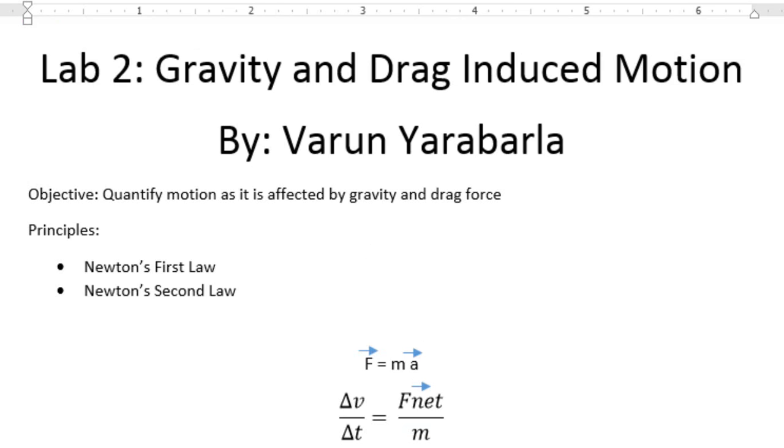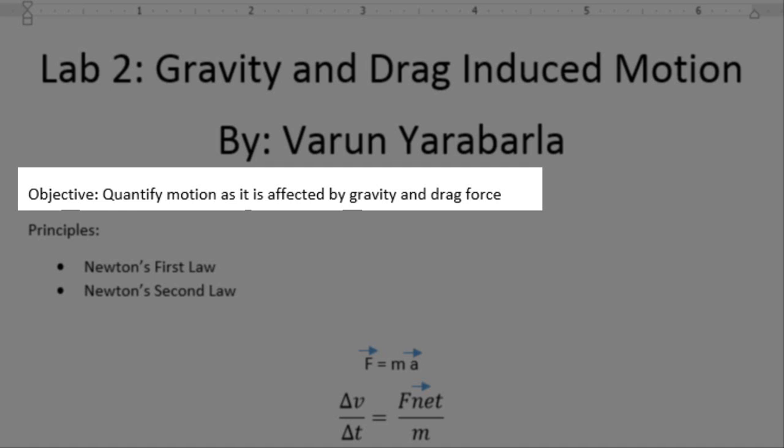Hey, physics fans. My name is Virginia Arbarla. This is my video report on Lab 2, Motion of a Falling Object, which is basically all about gravity and drag-induced motion.